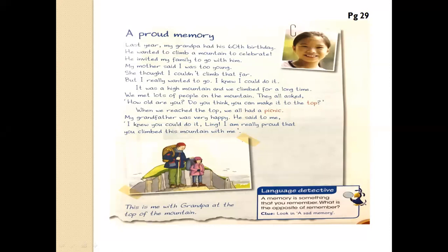Last year, my grandpa had his 60th birthday. He wanted to climb a mountain to celebrate. He invited my family to go with him. My mother said I was too young — she thought I couldn't climb that far. But I really wanted to go; I knew I could do it. It was a high mountain. We climbed for a long time. We met lots of people on the mountain. They all asked, 'How old are you? Do you think you can make it to the top?' When we reached the top, we all had a picnic. My grandfather was very happy. He said to me, 'I knew you could do it. I was really proud that you climbed this mountain with me.'